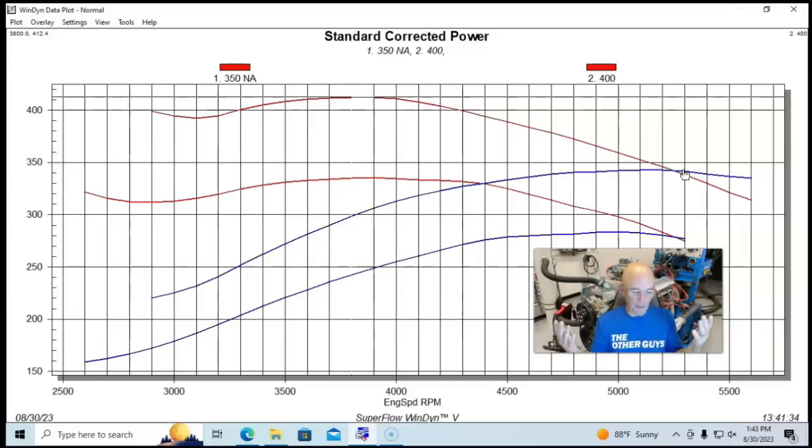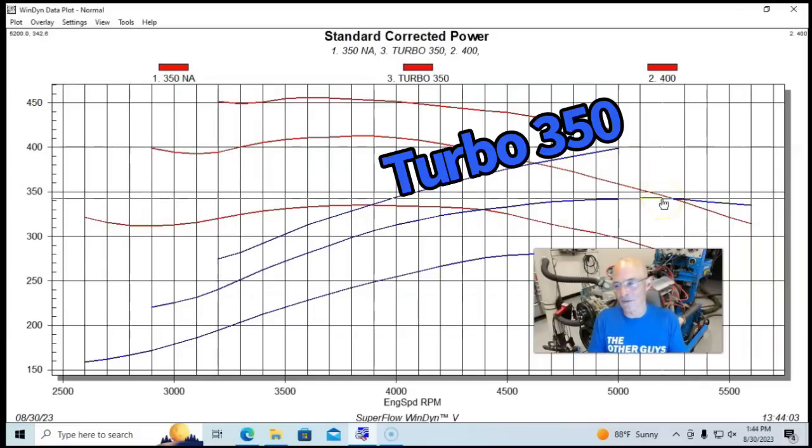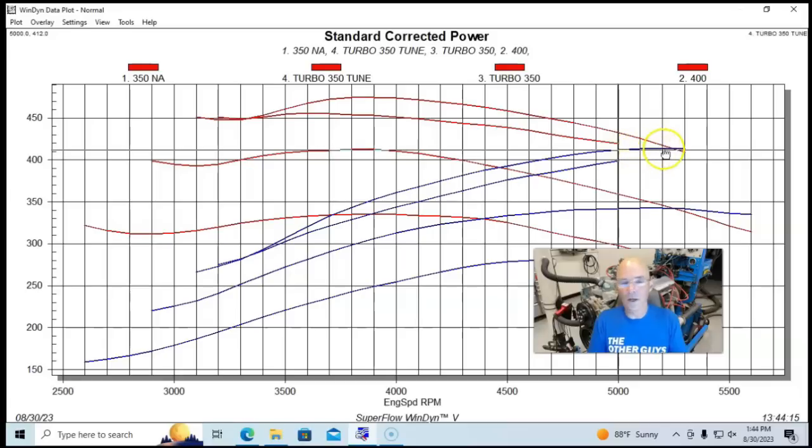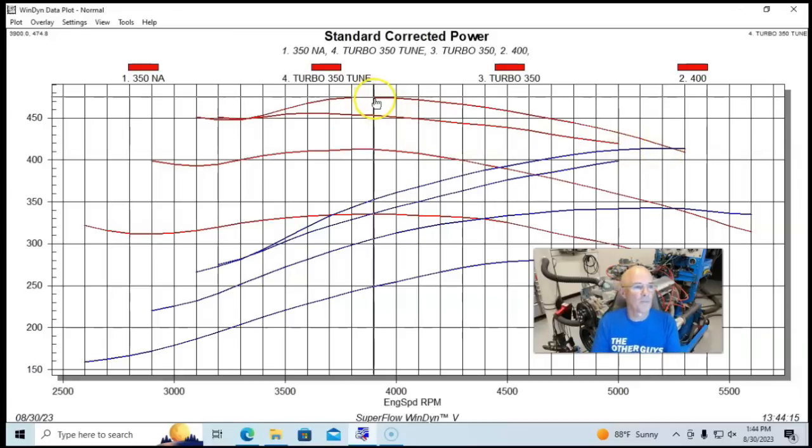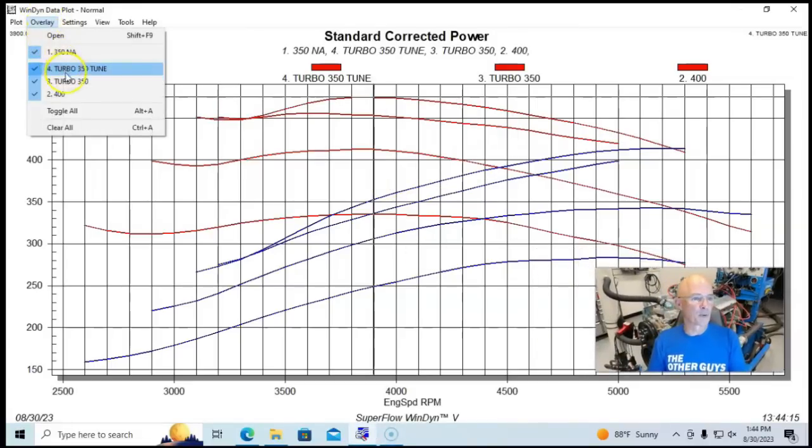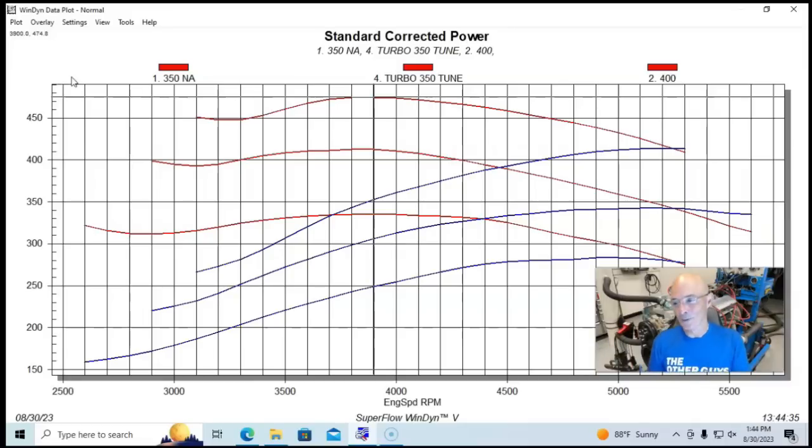The 400 is going to be better basically everywhere. It's going to have more torque. It's going to have more power if we equip them in a similar manner. But the important thing is how do we make our 350 run like a 400? Even if we were to add cylinder head and camshaft and stuff, we could get it to make more power than this 400 certainly, but it would not make the same low speed power. So yeah, how do we do that? Well, it's really kind of simple. All we have to do, we added boost. And when we added boost, we're up at 400 horsepower instead of 340 something for the 400.